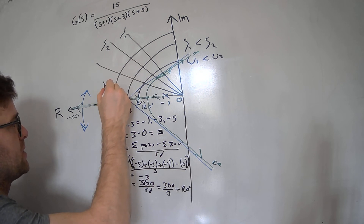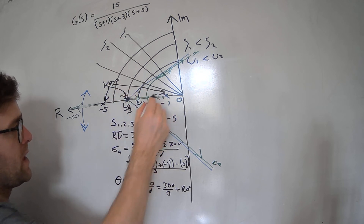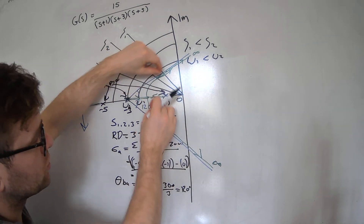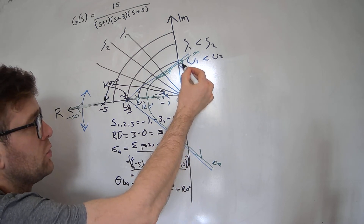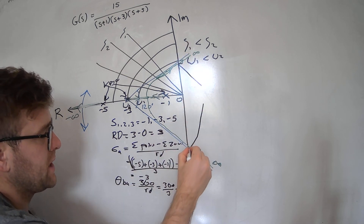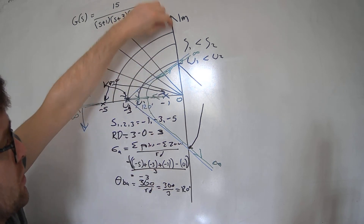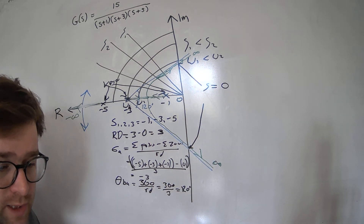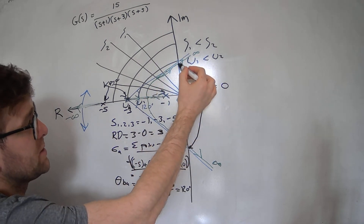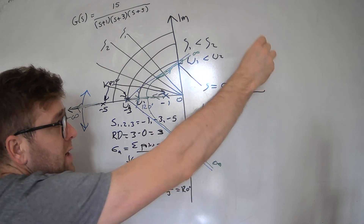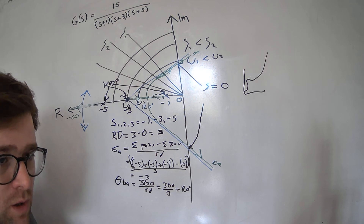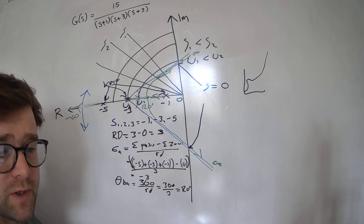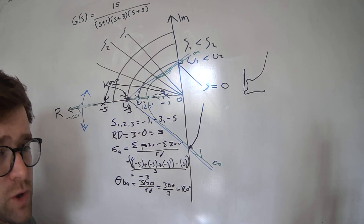At Kp equal to zero the poles start at the open loop pole locations. With a relative degree of three, increasing the proportional gain can move poles onto the imaginary axis, where the damping ratio equals zero and the system just oscillates. A value of Kp greater than this will result in an unstable system response that continues to grow. For this you should use the Routh-Hurwitz stability criterion.